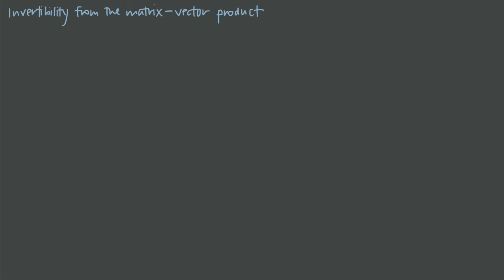In this video we want to talk about the invertibility of a transformation from the perspective of the transformation expressed as a matrix-vector product. Remember that if we have some transformation T, and T is a linear transformation, then we can always express it as a matrix-vector product. So if T is transforming vectors x, we can always write that as some matrix A times the vector x. We would call the matrix A the transformation matrix, because it's the matrix we multiply by any vector to apply the transformation.